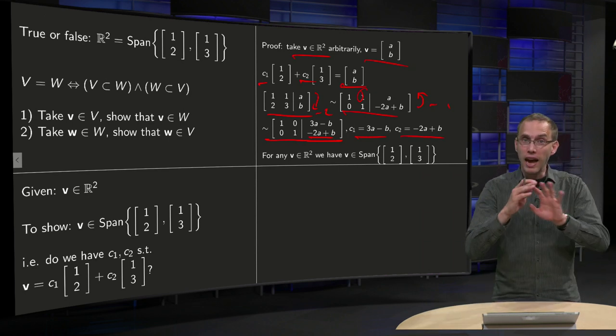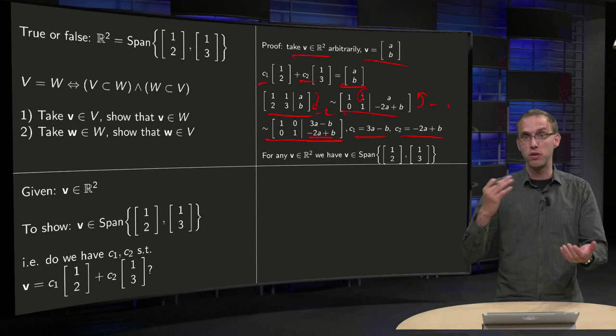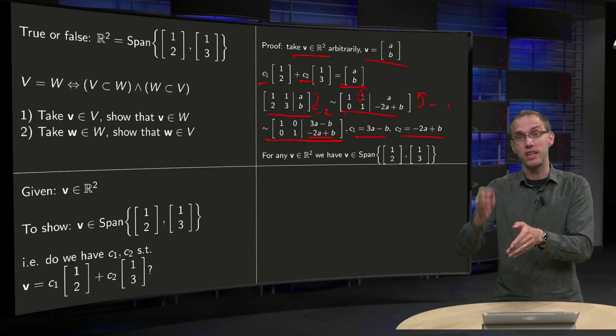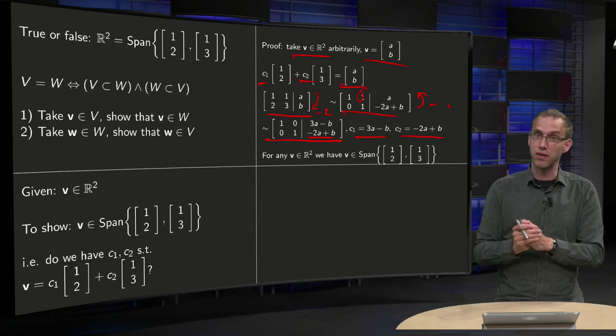So regardless of what a and b you take, you can always find your C1 and C2, such as C1 times the first vector plus C2 times the second vector equals this [a,b], this vector v.